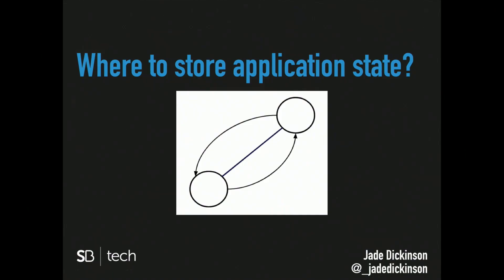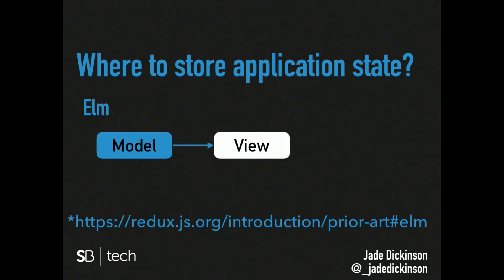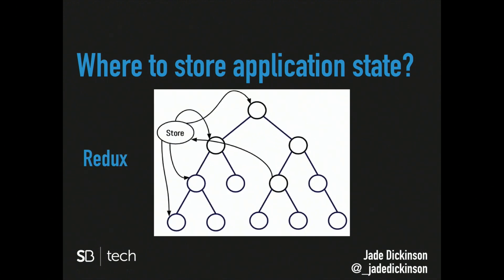To avoid storing state in individual child components, in React you hold your state in a top-level component and then pass that data down through to child components. This is the component state paradigm, and it may be fine in a small application where you've got a few levels in your DOM tree. Redux solves this by providing a global state that any component in the tree can use and trigger changes to. In Redux, the state of your whole application is stored in an object tree within a single store.